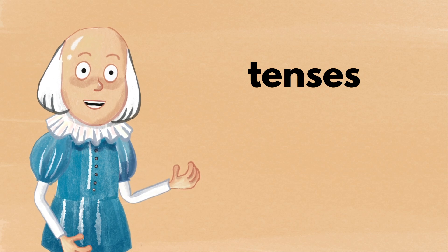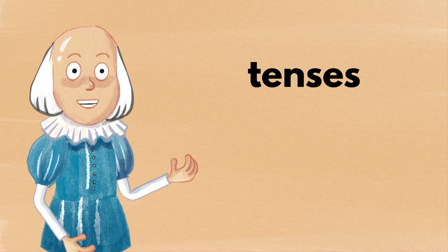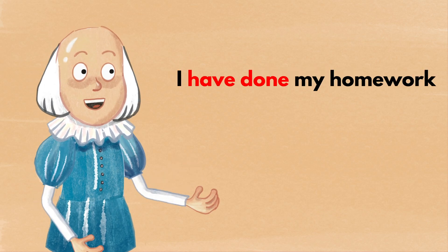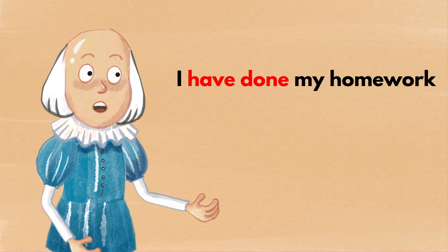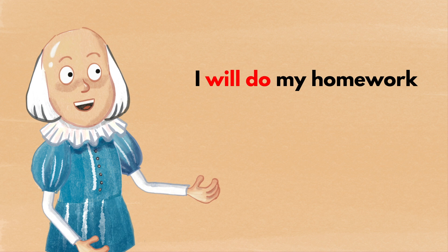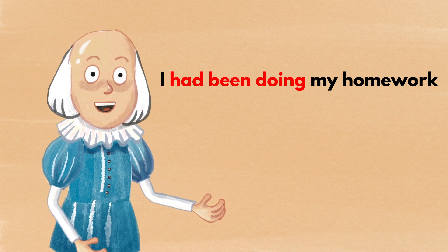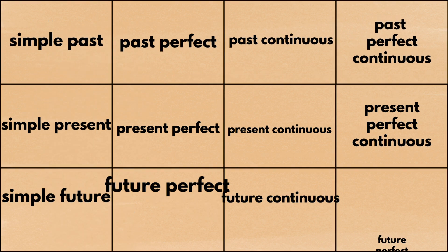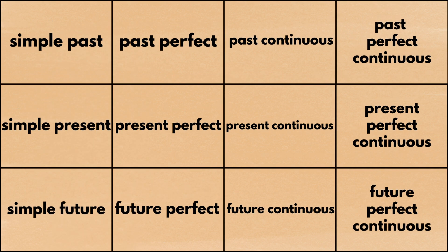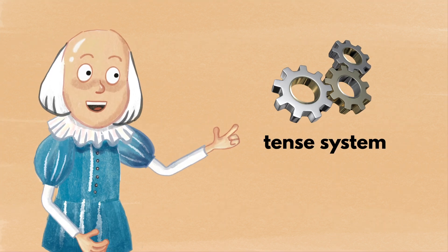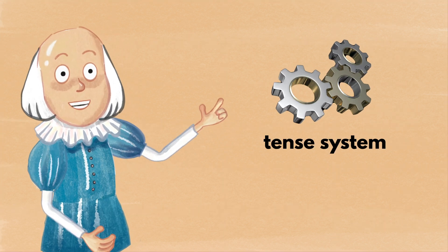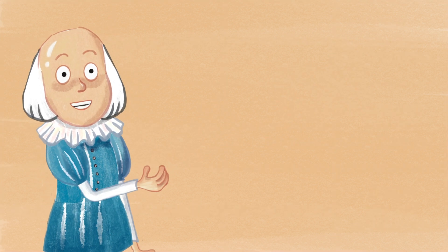Tenses are time-related expressions such as I have done my homework, I will do my homework, or I have been doing my homework. There are 12 kinds of tenses and this video will briefly explain all of them and tell you how the tense system works in general.